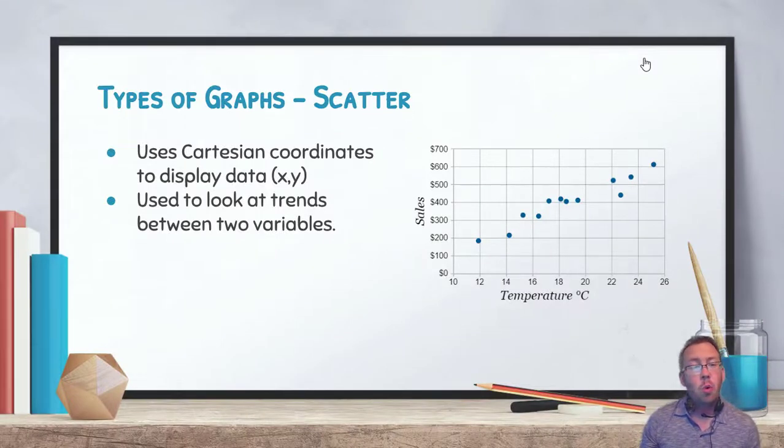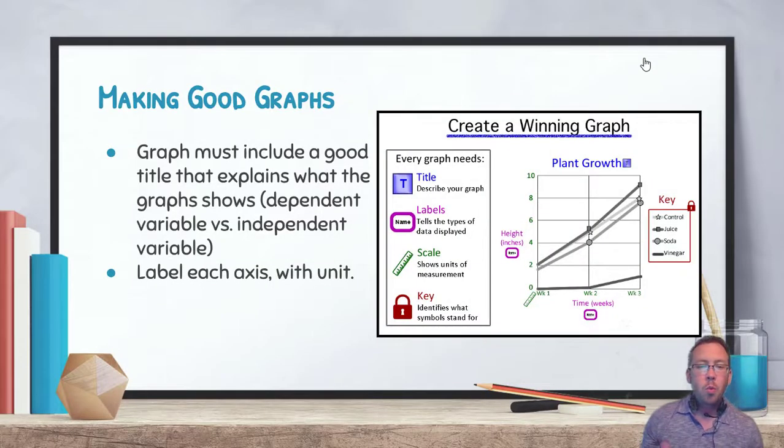A scatter plot just is using coordinates to display data, and typically we look for trends between two variables. So for example, we look at this on the right here. We have on the x-axis temperature and on the y-axis sales, and what we are doing is looking to see if there is a trend between those two variables. And as you can see here, as the temperature of the graph or as the temperature increases in the graph, the sales increase as well. That helps us create correlations between different sets of data and helps us understand more about the world around us. So scatter plots are going to be used quite frequently in this class that you're taking.